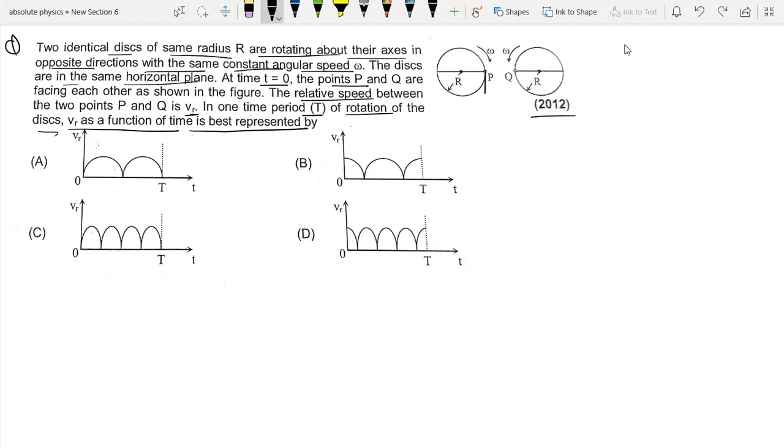The speed of this point is omega times R. So starting with the initial velocity, it will be zero because the velocity is the same. At t equals zero, the velocities are in opposite directions.